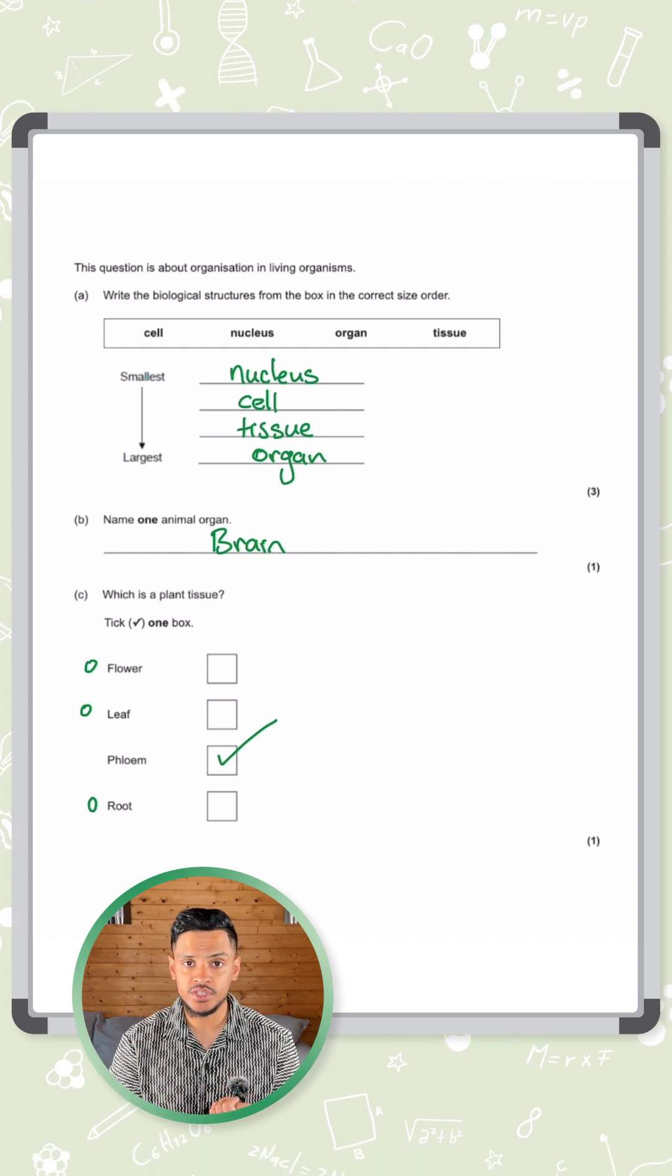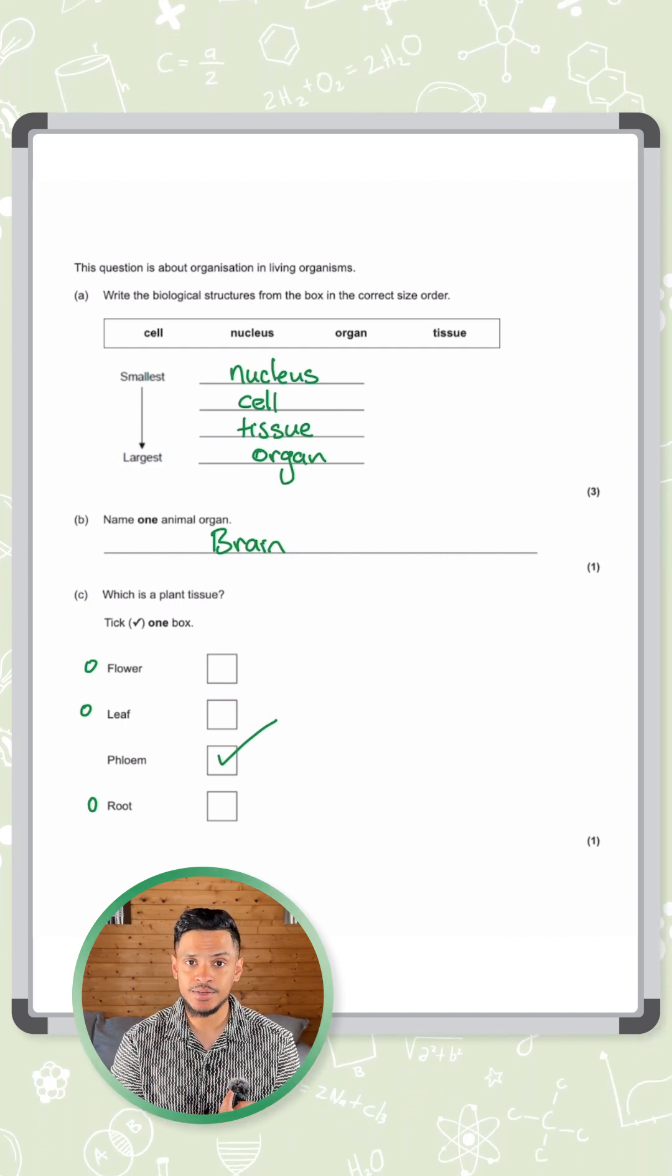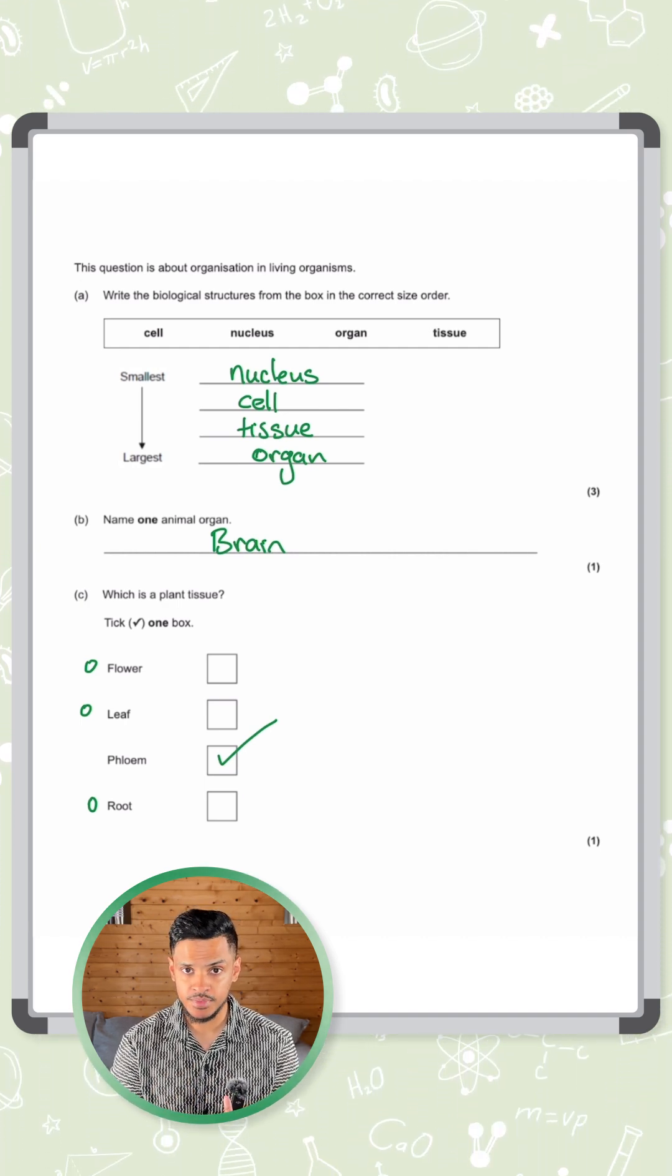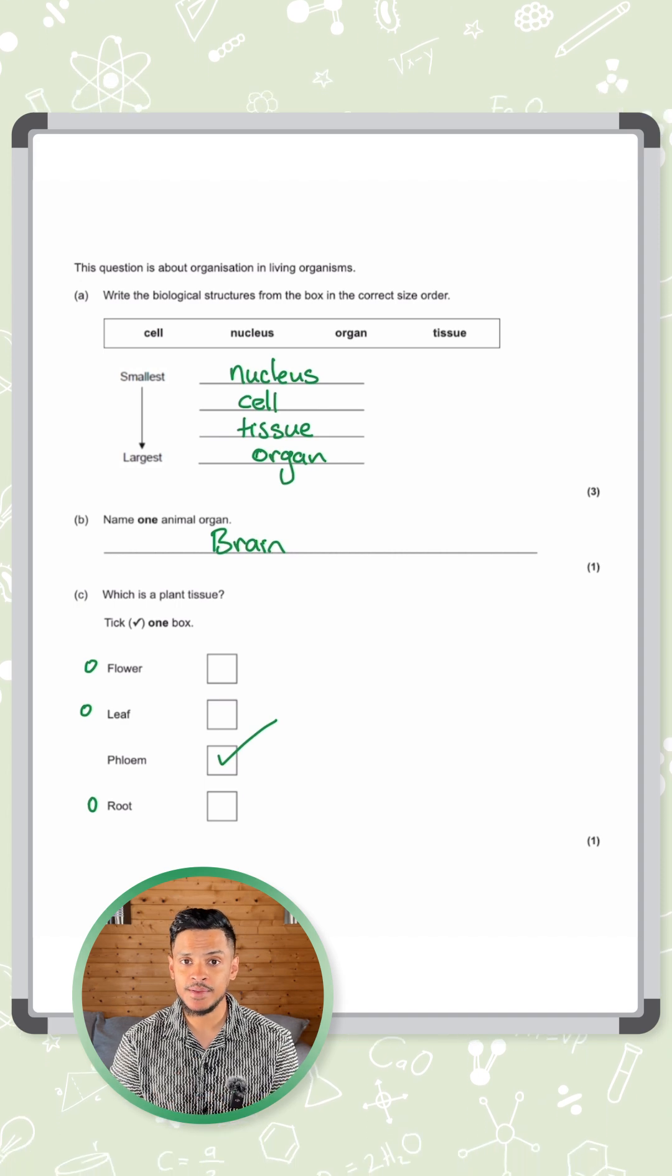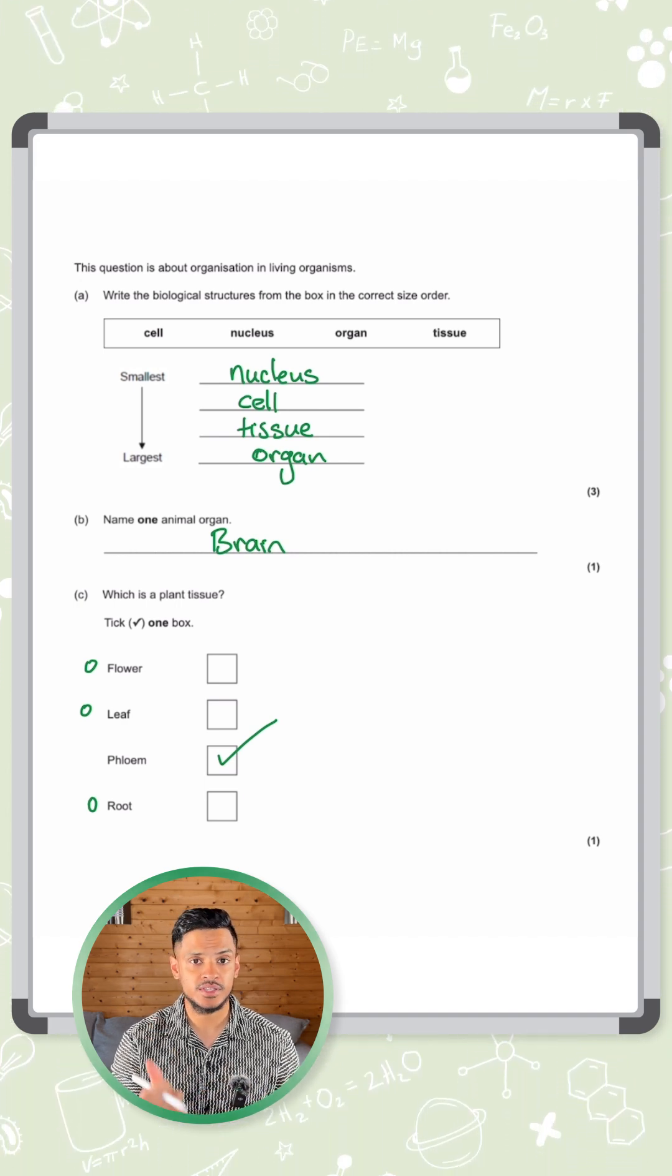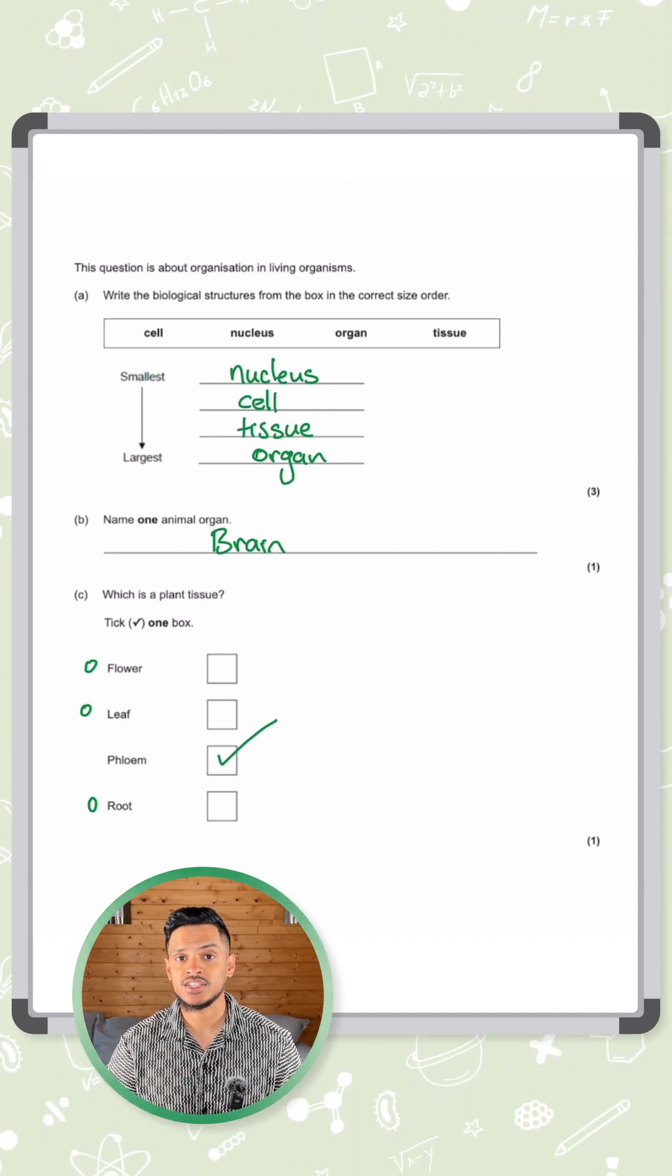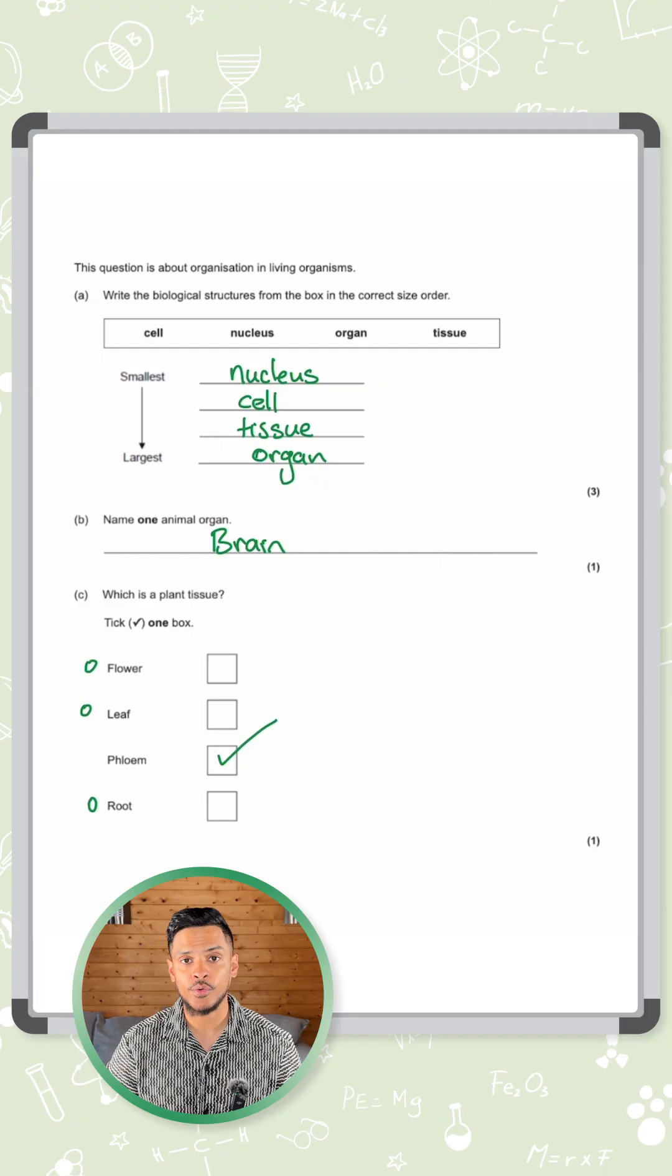We've got the epidermal tissue, we've got the palisade mesophyll, we've got the spongy mesophyll, we've got the meristem, we've got the phloem and we've got the xylem. Those are the six different tissue types you need to know for plants. So the answer here is phloem.